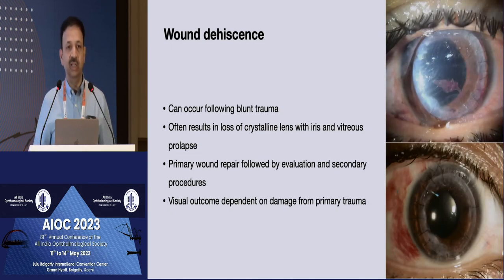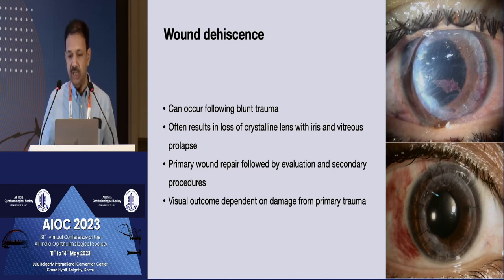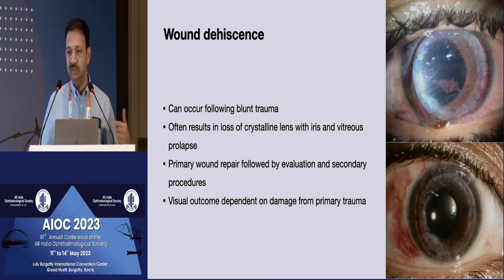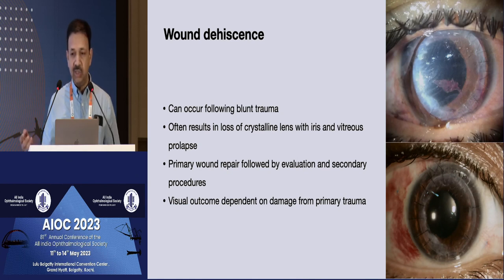Finally, trauma resulting in wound dehiscence is again an emergency. If not managed properly, it often results in loss of the crystalline lens and vitreous prolapse. We used to think that DALK gives you a stronger wound, but that's not necessarily the case. A patient who had undergone DALK, got hit in the eye, had this clinical picture, was managed by the local corneal surgeon with suturing, and later a secondary IOL implantation was done — the graft remained very clear. The outcome depends on the original amount of damage and how the patient was primarily managed.